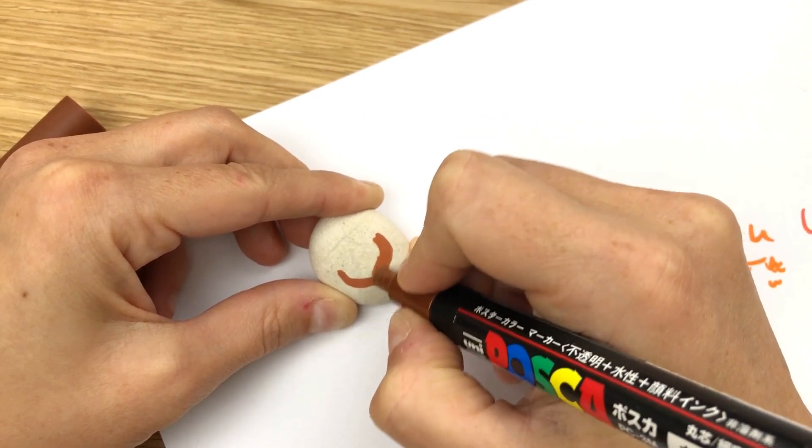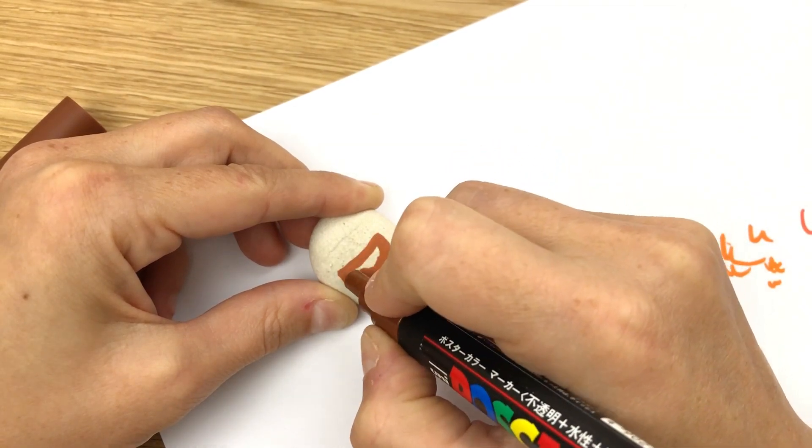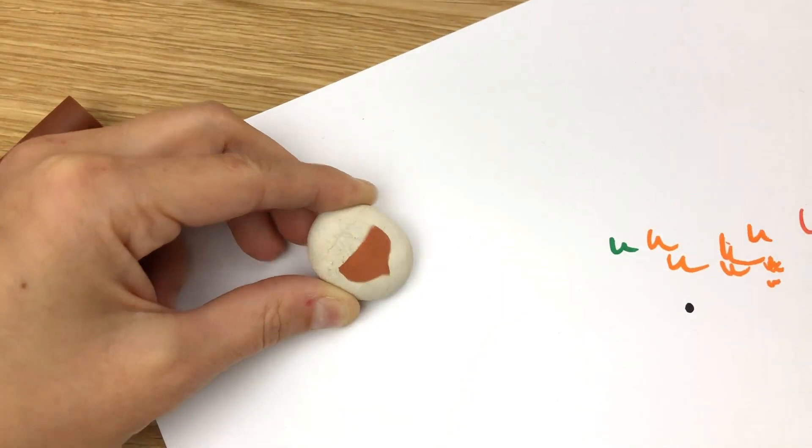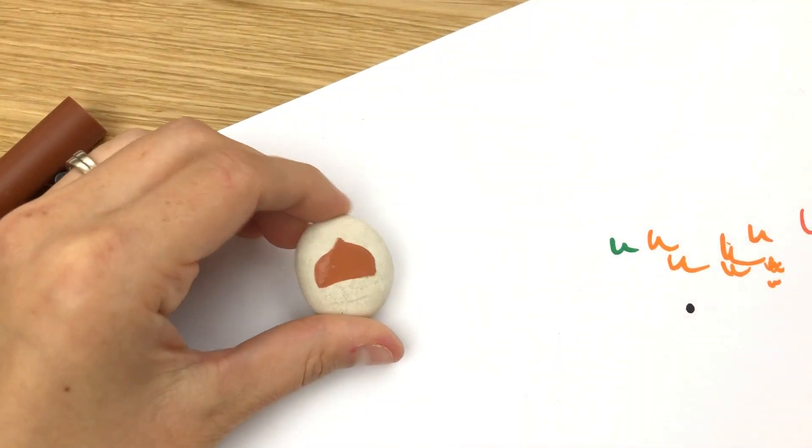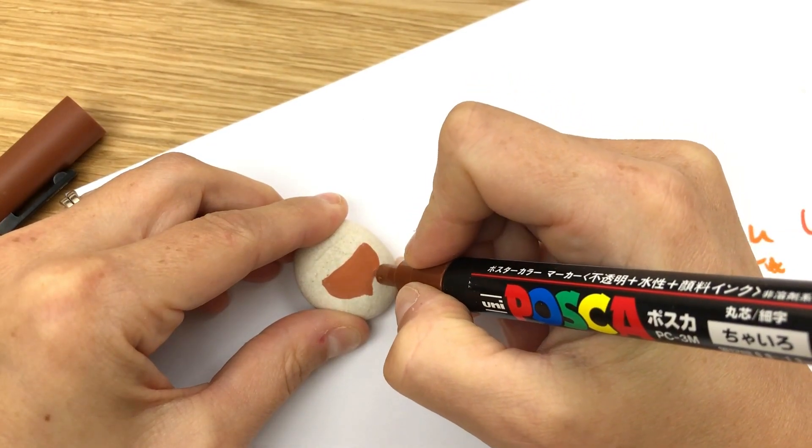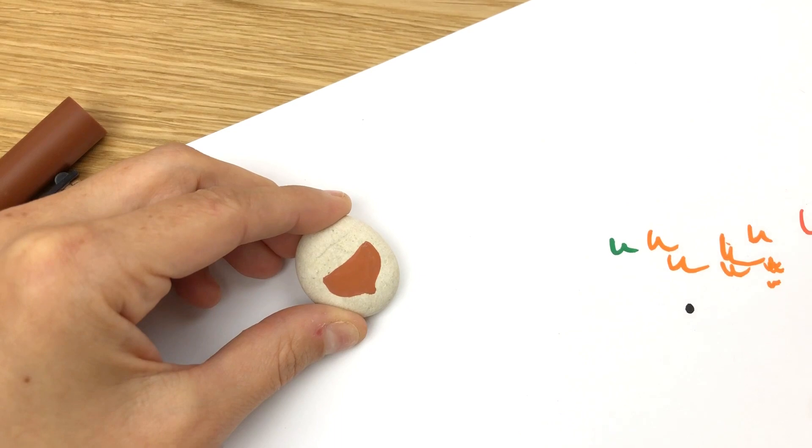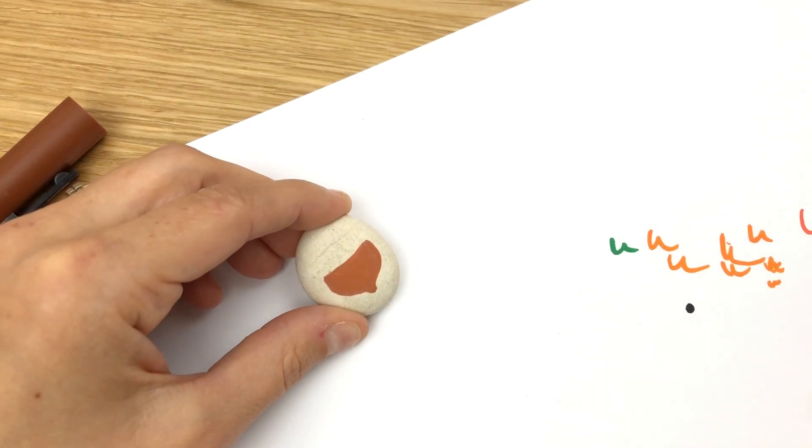So the first thing we're gonna do is we're basically making an upside down Hershey kiss, is kind of what it looks like to me. It just comes to a little point there just like that.